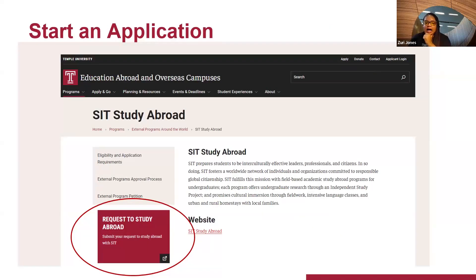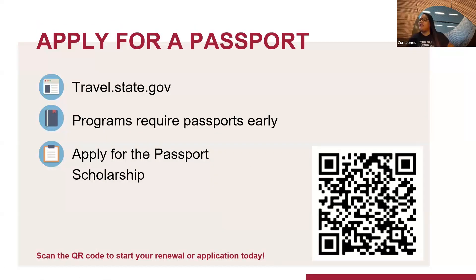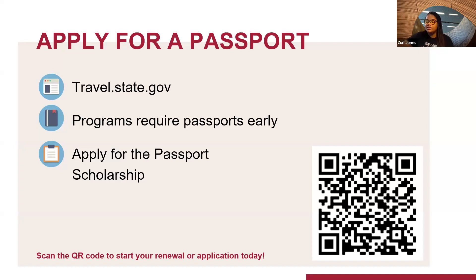When you're ready to apply, go to the page of the college or company you're going to study abroad with and complete the request to study abroad. I also recommend applying for a passport as early as possible. We offer a passport scholarship for first-year Temple students — you have until the end of May to get your passport, and we actually reimburse the cost. Pay for your passport, then provide us with the receipt and we'll reimburse you.